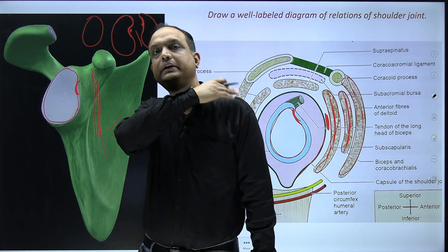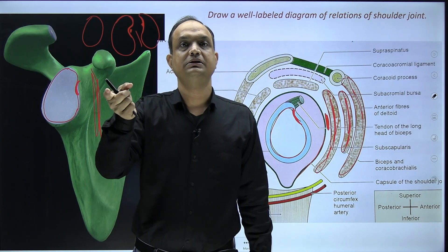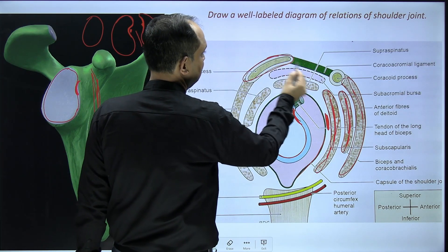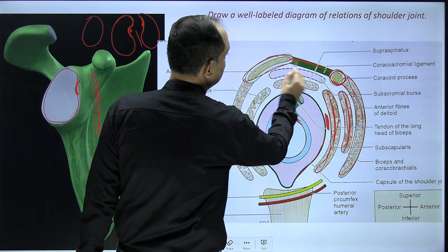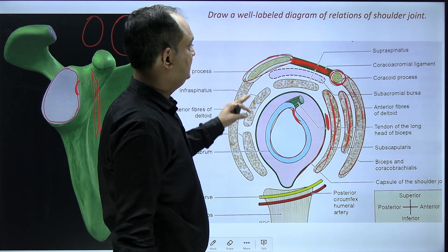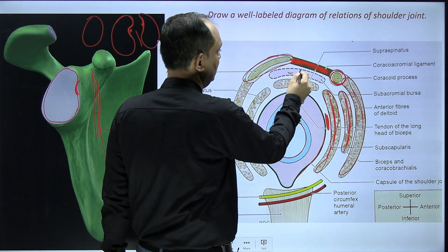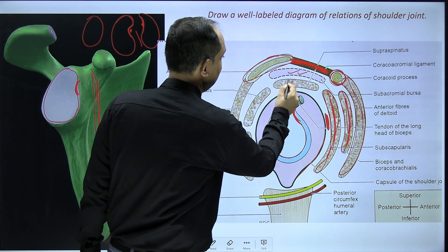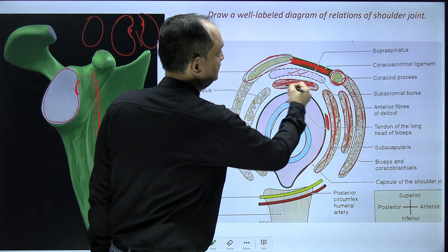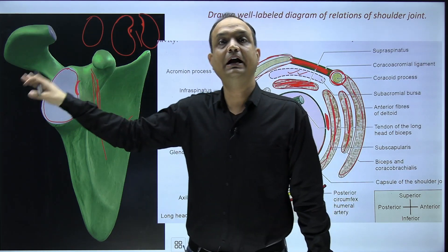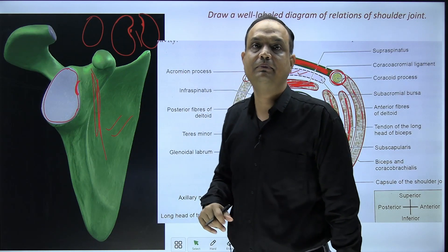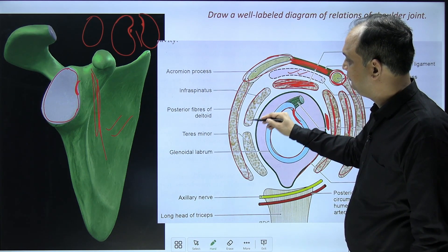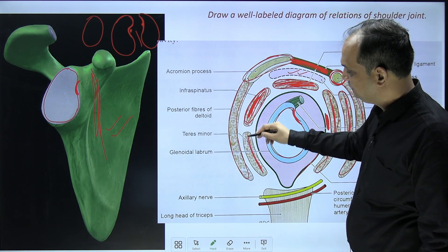For the superior relations in the diagram, the most important is the coracoacromial arch, formed by three structures: the acromion process, the coracoid process, and the coracoacromial ligament in between. Below the coracoacromial arch, draw the subacromial bursa, which separates the arch from the supraspinatus muscle below. For the posterior side, draw the posterior fibers of the deltoid, and deep to them draw the infraspinatus and teres minor muscles.